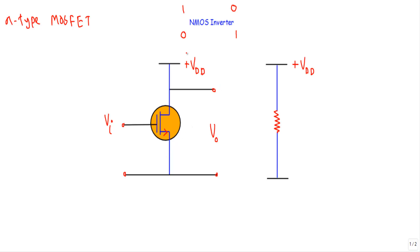Before going to the logical operation of the NMOS inverter circuit, let me talk about the switching property of an N-type MOSFET. Switching property means I will talk about the ON state condition and OFF state condition of this N-type enhancement MOSFET.